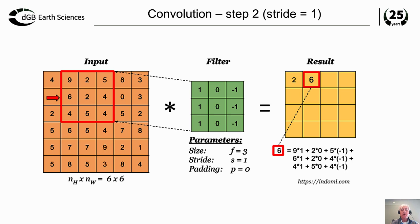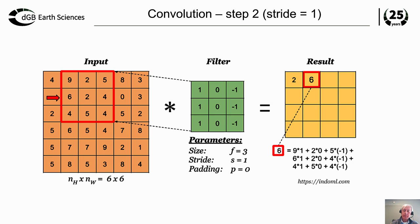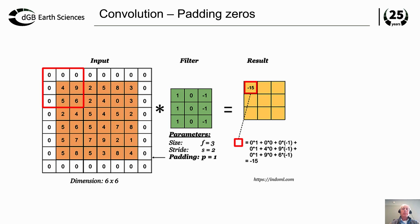We then move the whole filter one position to the right and compute the next value, remapping the 6-by-6 input into a 4-by-4 output. Instead of taking one step at a time — called the stride — we can also take a stride of 2, which maps the 6-by-6 image to an even smaller 2-by-2 output of only 4 elements. To avoid edge effects we can pad some zeros, which changes the results slightly at the edges.